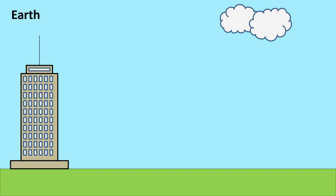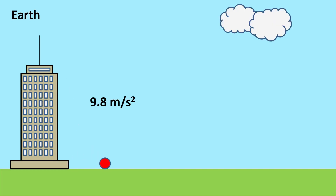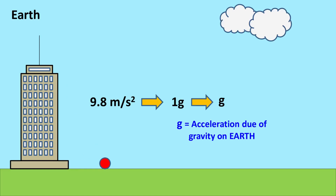Let's say you drop an object on Earth. Because of Earth's gravity, the free falling object would have an acceleration of 9.8 meters per second squared. The acceleration of 9.8 meters per second squared is simply termed as 1g acceleration.